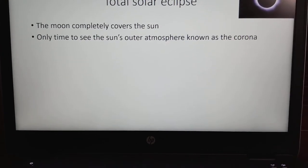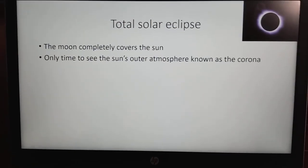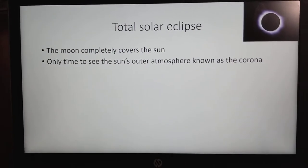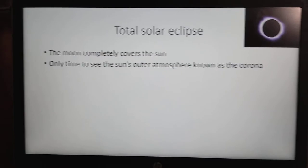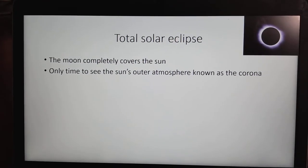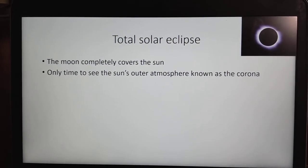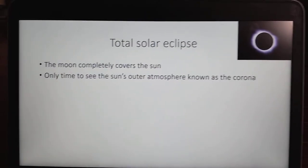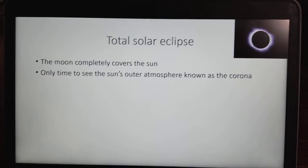Did you know that the sun itself is actually brighter than its atmosphere? So when the moon is covering the sun, there's no sunlight, so that's how you can see the corona.